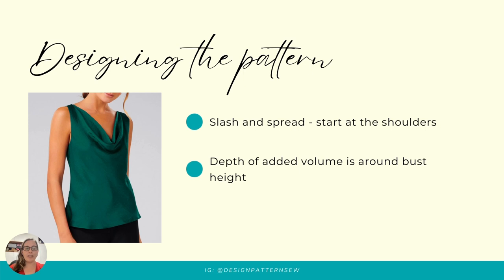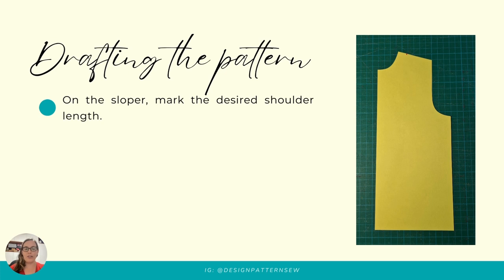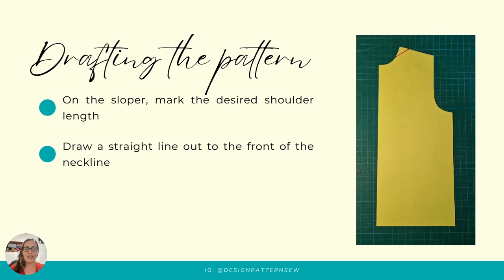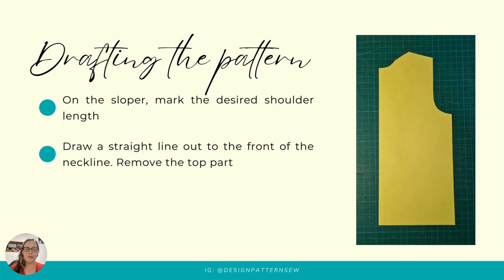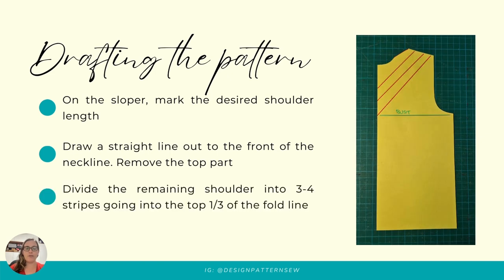Here is a very simple cowl neckline done by slash and spread. We're going to start at the shoulders and additional fabric will be added around the neckline. The depth of the added volume is around the bust height and we don't have additional pleats or volume beneath the bust height. On our sloper we're going to mark the desired shoulder length. From here we'll draw a straight line out to the center neckline and cut this piece off. For slash and spread we're going to draw several horizontal lines from the shoulder seam down to the center front fold, drawing our lines down towards the bust and not further down.